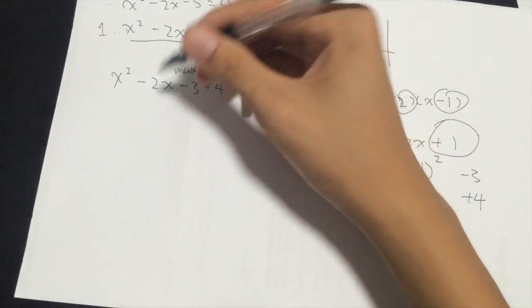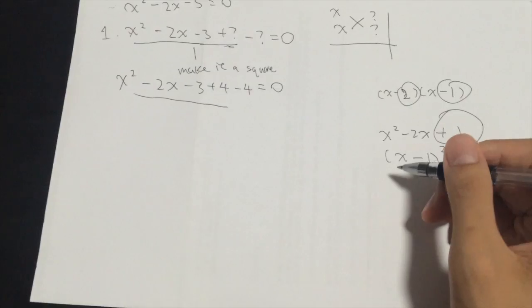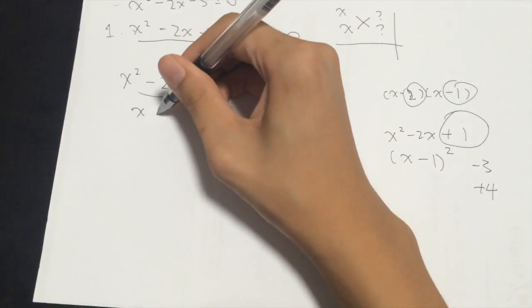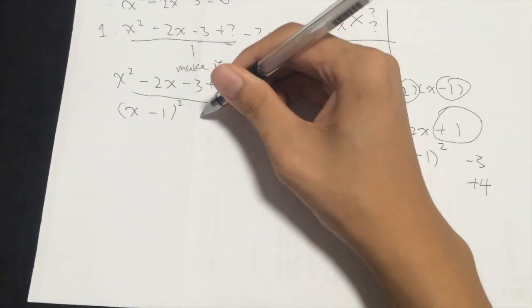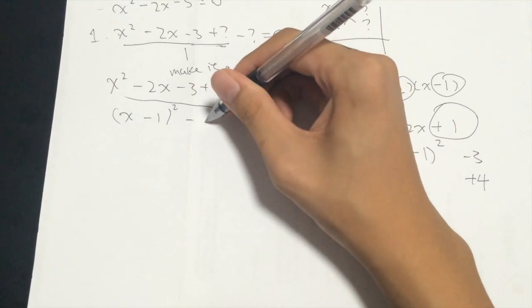Alright, now you can make this a square, where x minus 1 is squared. That's how it works. And minus 4.